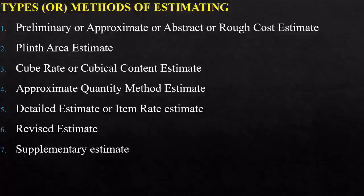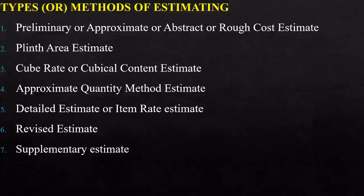The seventh type is the supplementary estimate, which is also a detailed estimate. It is prepared when additional works are required to supplement the original work — for example, to include the latest technologies that have come into force during progress of the work, and for which no prior permission was obtained. In that case, we go for a supplementary estimate.